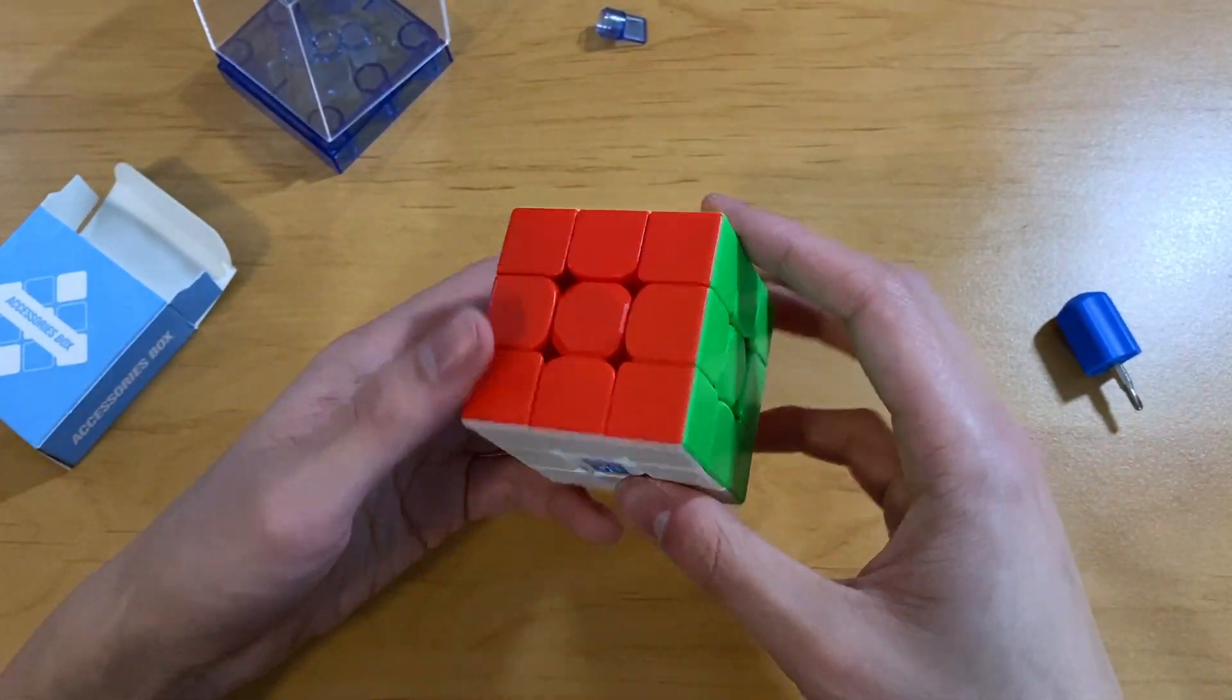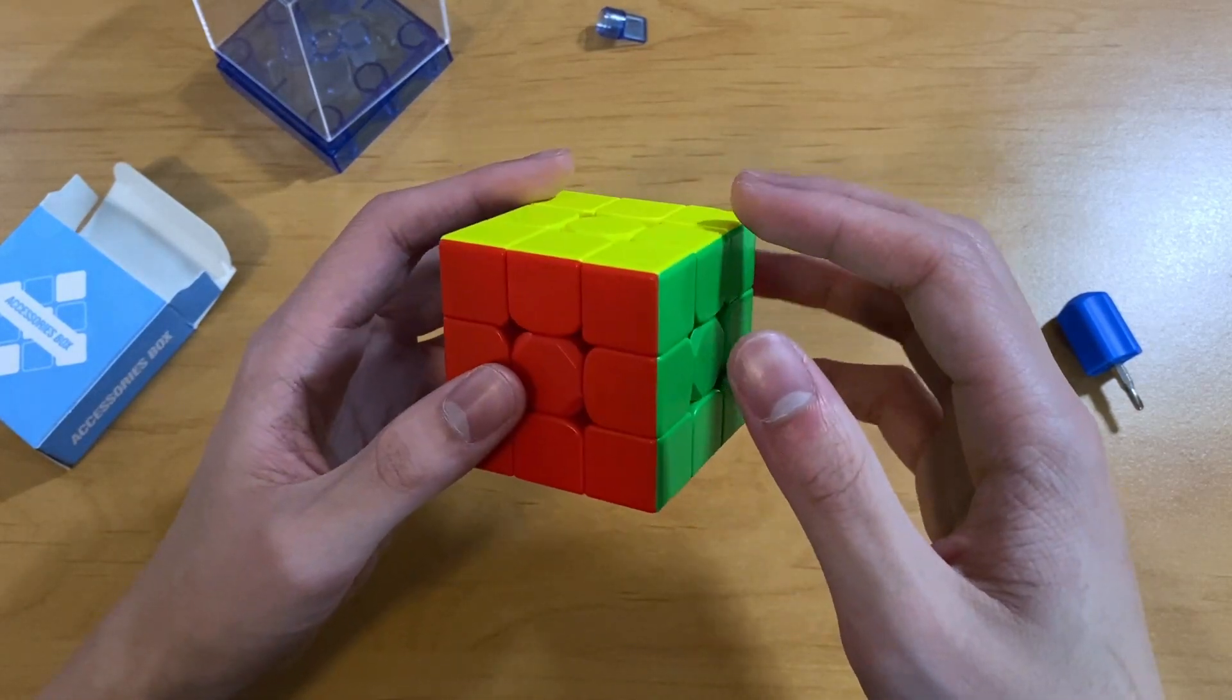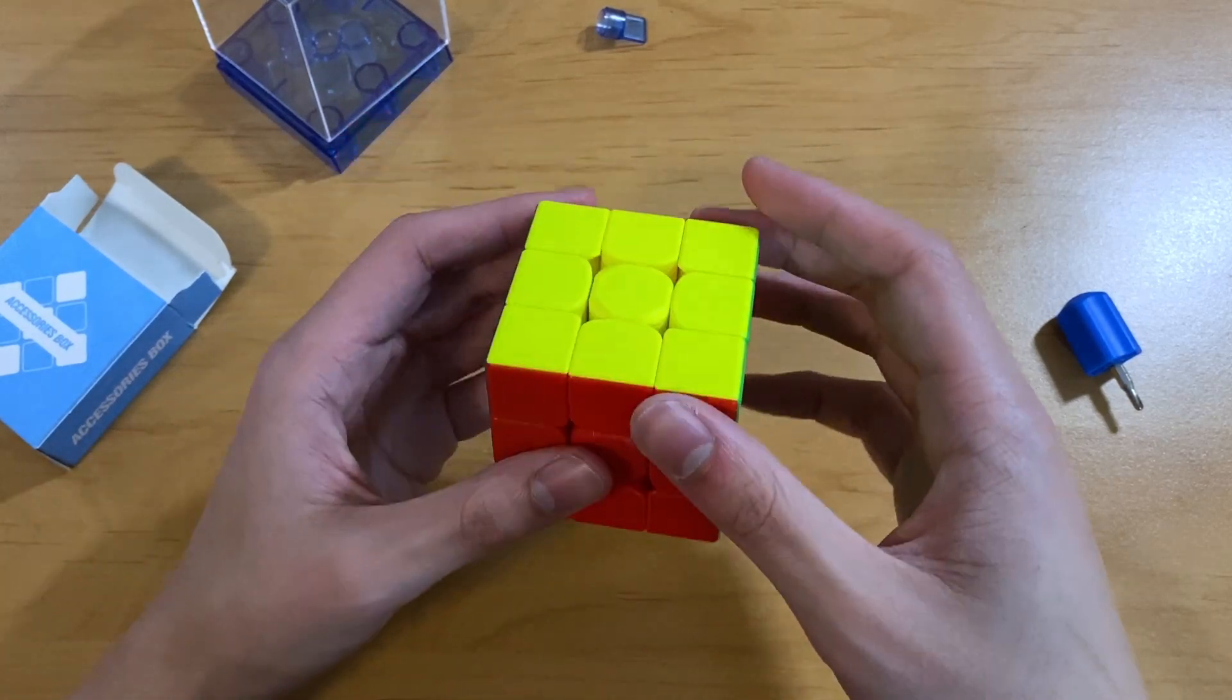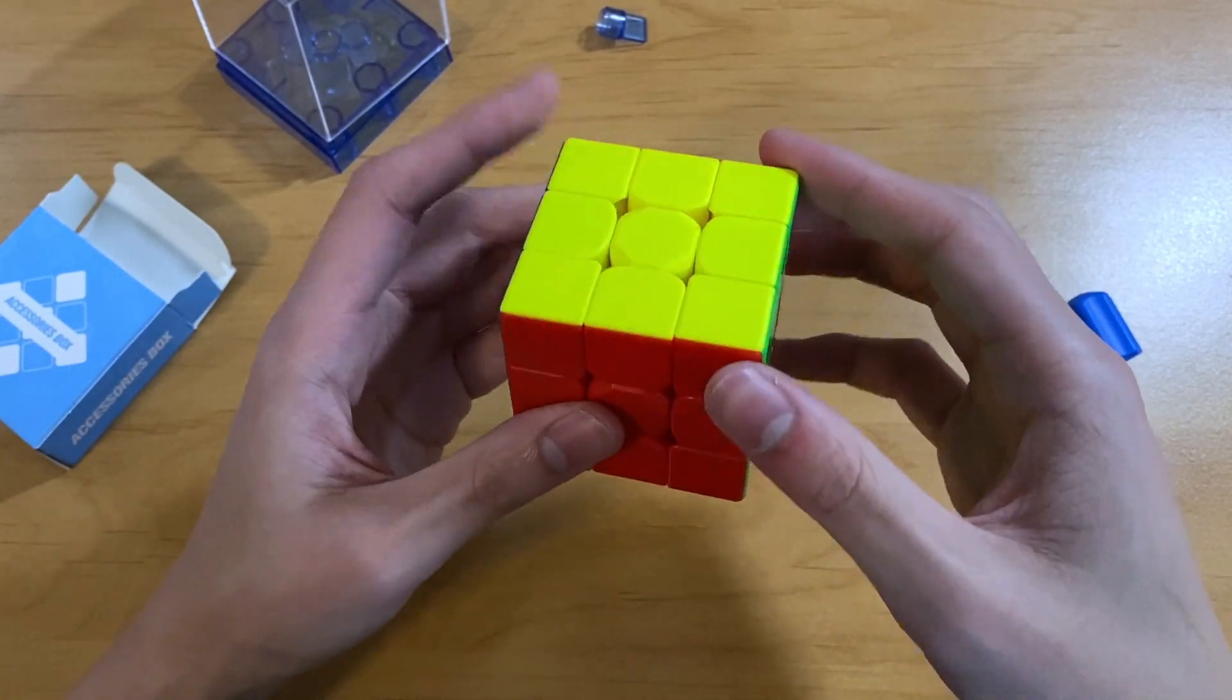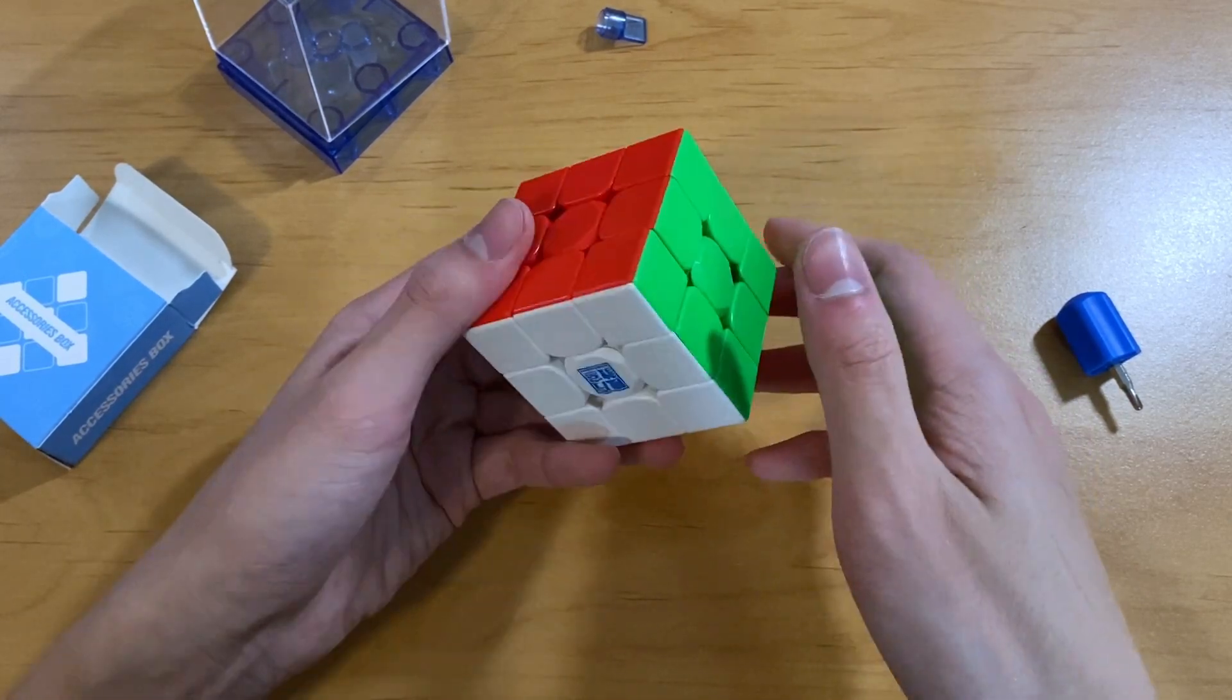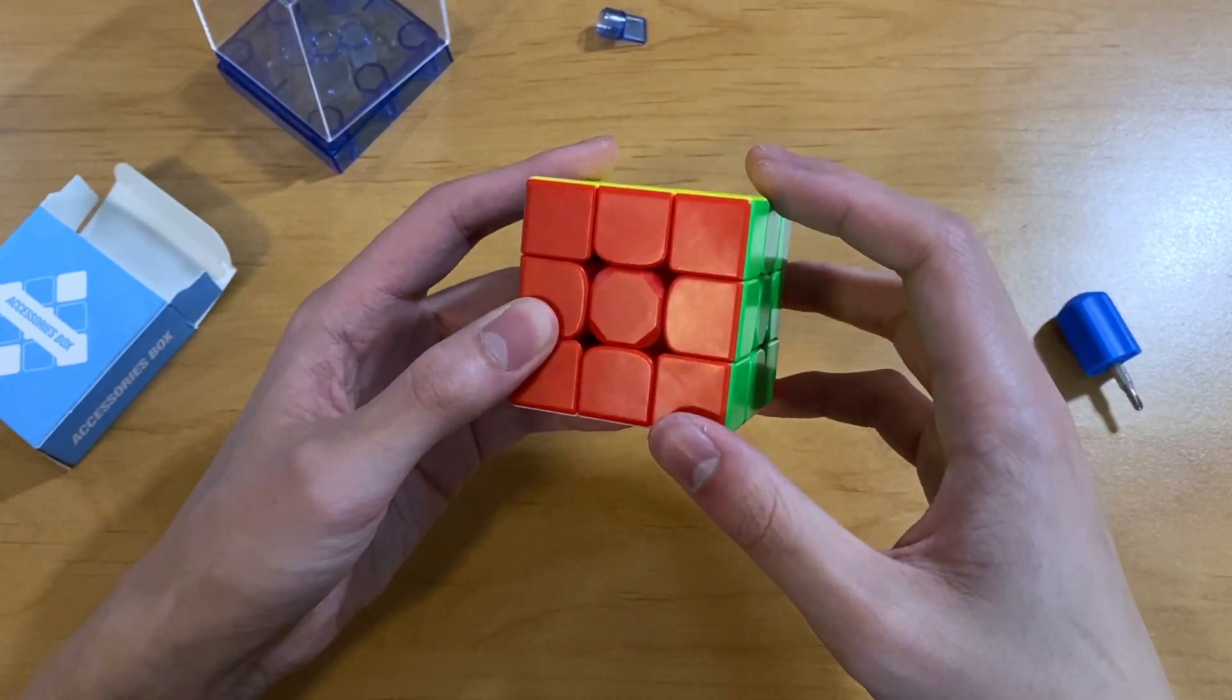Honestly, this cube feels really average. I don't know what I was expecting, but this is kind of exactly what an average cube feels like out of the box. I'm gonna try corner cutting. Okay, it can cut a little bit past 45, but that's it. And then reverse is about line to line.